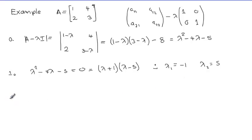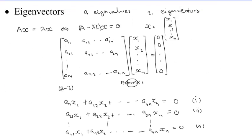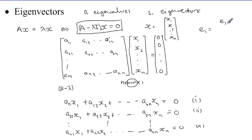Now we can proceed to the next step. I'm numbering these steps so you can see exactly which steps to follow and in what order. In this next step, we're going to find the eigenvector. Our task is to find vector x, which is an eigenvector. I'm going to call it e1, corresponding to eigenvalue number 1, and this eigenvector will have components e11 and e12.